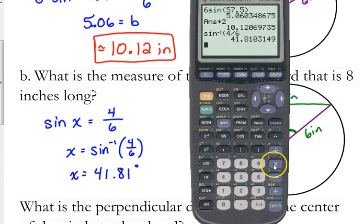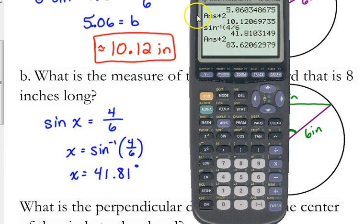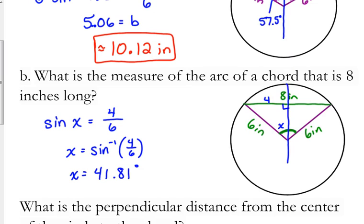So, what do we do to it? Multiply it by 2, because it was bisected. 83.62. That makes a little bit more sense than 41. I know it was supposed to be smaller, but probably not that much smaller compared to 115 degrees.